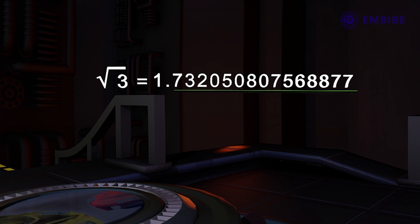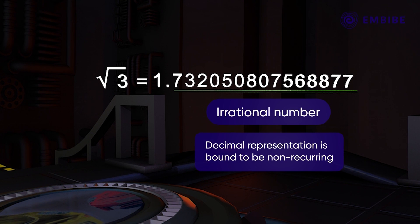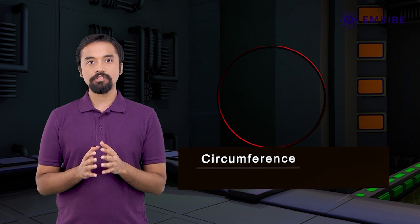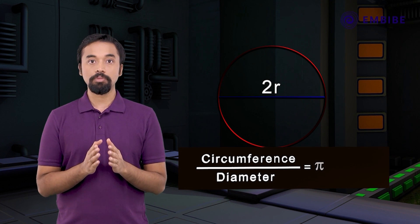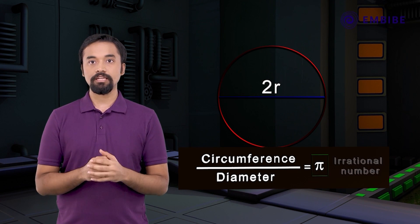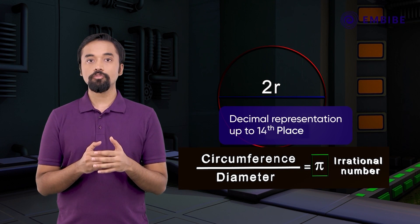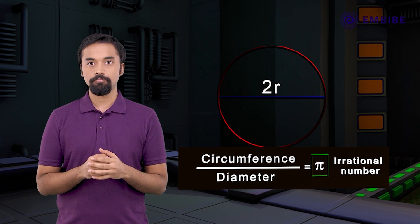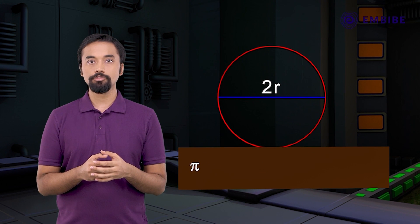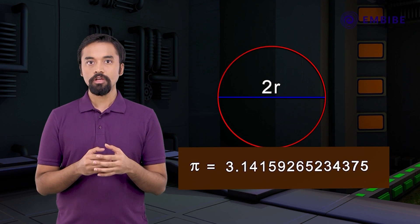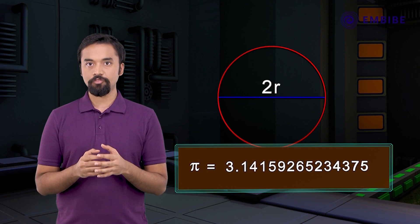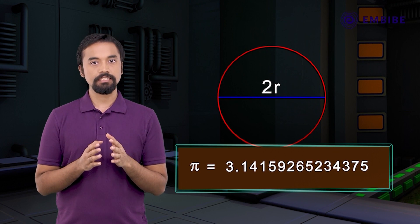As √3 is an irrational number, its decimal representation is bound to be non-recurring. The ratio of the circumference to the diameter of a circle, which equals pi, is also an irrational number. Its decimal representation up to the 14th place is: π = 3.14159265358979.